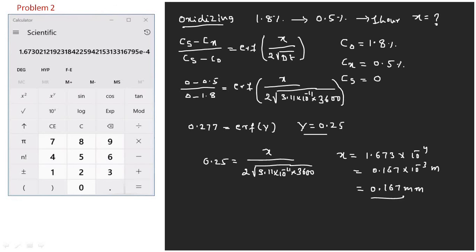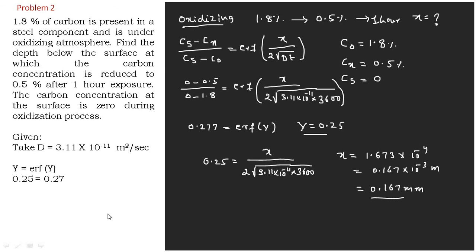In this way, with the help of second law of diffusion, we can calculate the distance at which 0.5% of the carbon is existing, that is at 0.1673 mm.